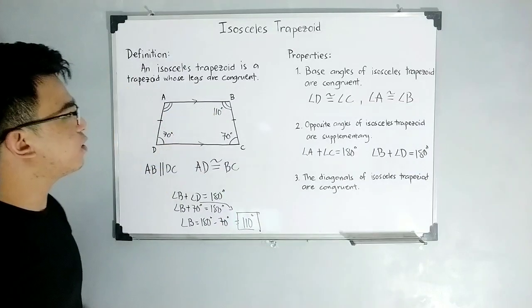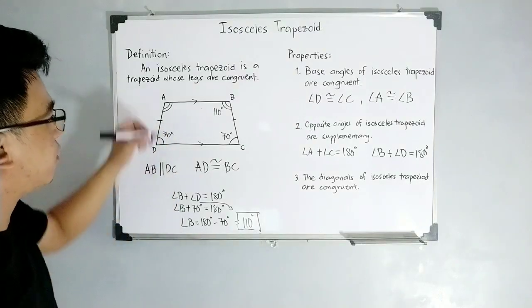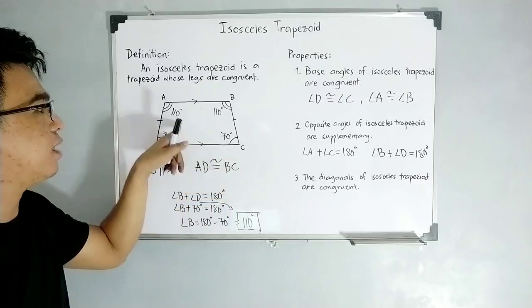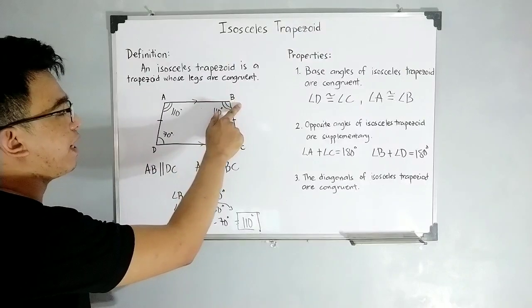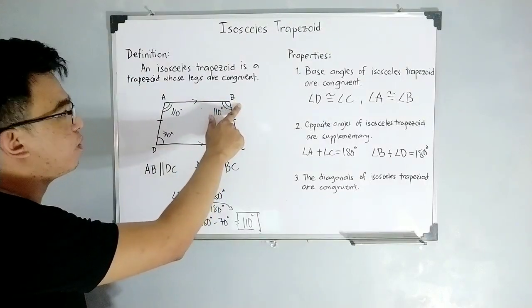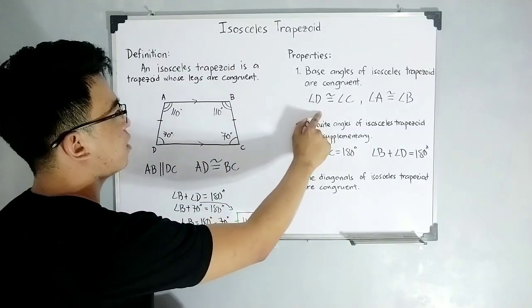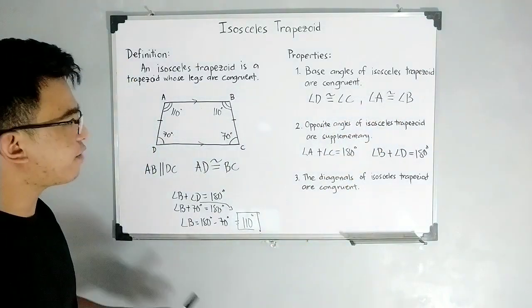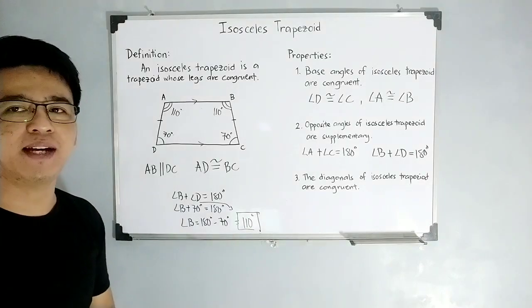So, the question here, do we need to solve for or to calculate for angle A? No. This one is also 110 degrees because angle C and angle A are supplementary angles. And aside from that, angle B and angle A are base angles, which is, earlier, we said, they are congruent based on property number 1. So, that's it for property number 2. I hope you learned our property number 2.